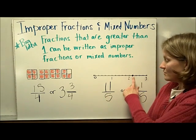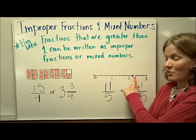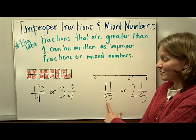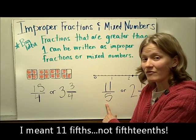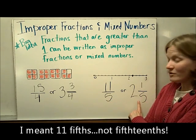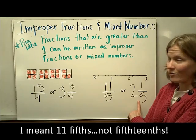So the point on this number line can be written as the improper fraction 11 fifths, or the mixed number 2 and 1 fifth.